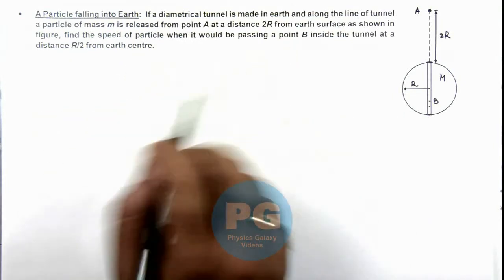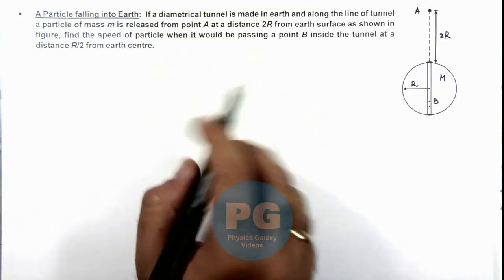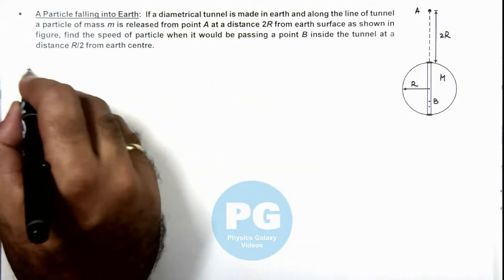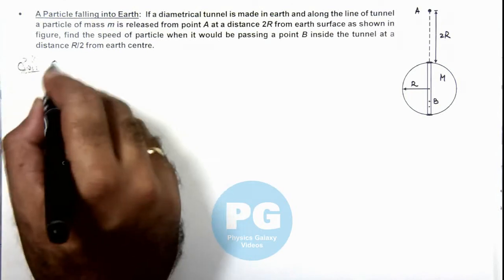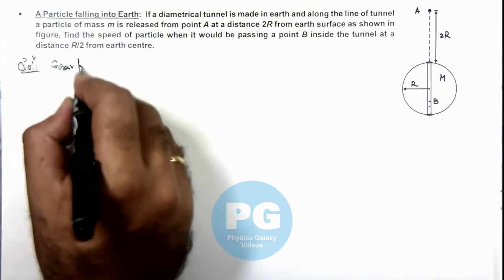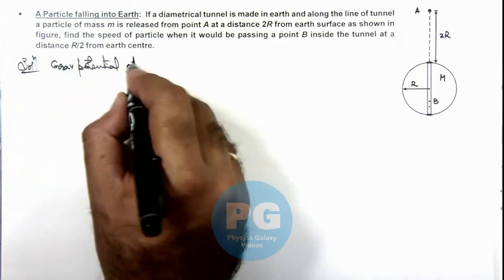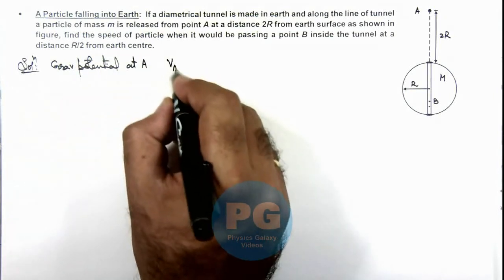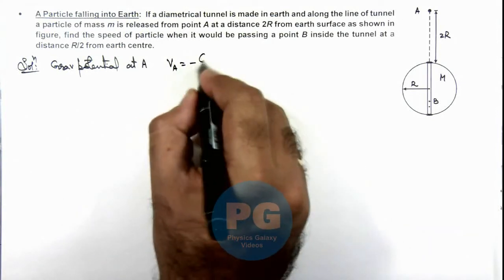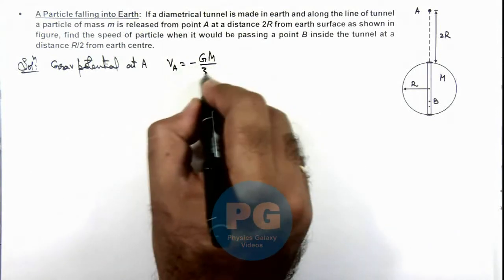Here, we can see at point A, if we calculate the gravitational potential. So gravitational potential, if we calculate at point A, this can be given as due to earth it is minus GM by 3R.